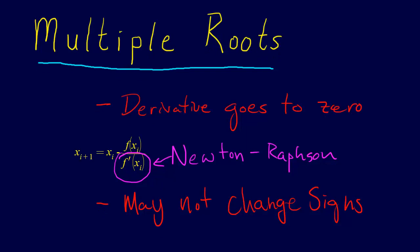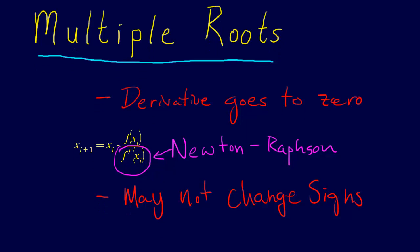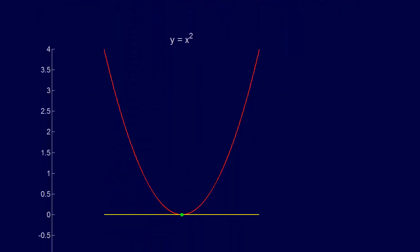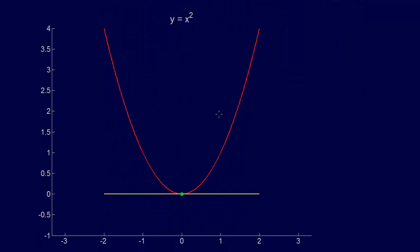So one example where we see this problem happen is just for the simple example of y equals x squared. We can see both of these two problems that we brought up earlier come in. First of all, right here where the root is, we see that we are going to zero. The tangent line is actually shown, but it's actually also the zero line, and we can see that the derivative at that point is zero.